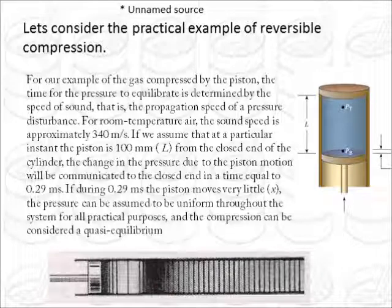Let us take a practical example. See, for the room temperature air, the sound speed is approximately 340 meters per second, and that is the speed of our pressure wave. Now if we assume that at a particular instant the piston is 100 millimeters from the closed end of the cylinder, then the change in pressure due to the piston motion will be communicated in about 0.29 milliseconds. Now if during these 0.29 milliseconds the piston moves very little, the pressure can be assumed to be uniform throughout the system for all practical purposes, and this is how we mimic a quasi-static process.